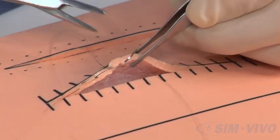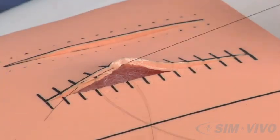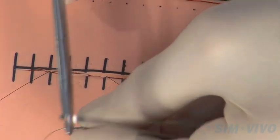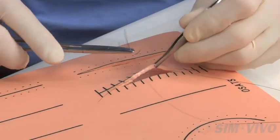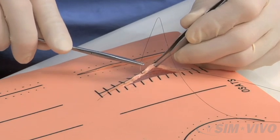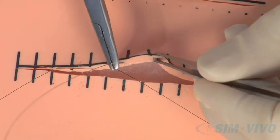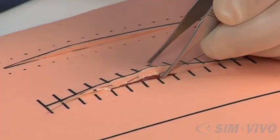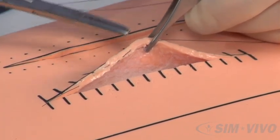Load the needle again, move over one more cross hatch, enter and exit at the cross hatches. When you're done you will see that all the sutures are placed within the width of the skin.